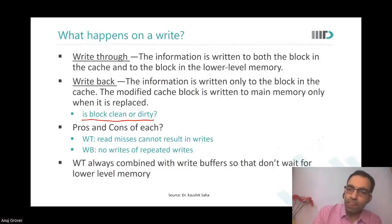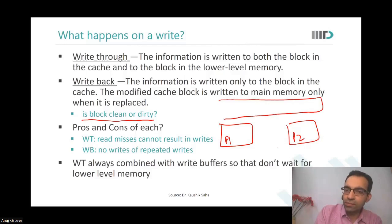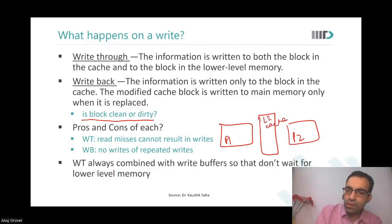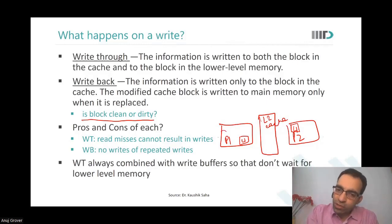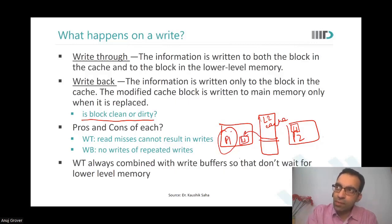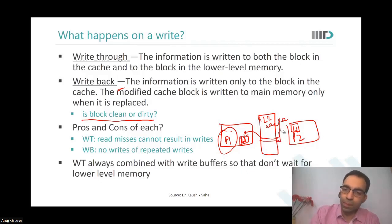Let's say there are two processors — processor one and processor two — and they have a shared L2 cache. There is an L1 cache for each. Processor one fetched particular data and brought it to the L2 cache, then to the L1 cache and started using it. As it was running the program, it updated the contents of the L1 cache. Since the policy is write-back, it set the dirty bit to high in L1.